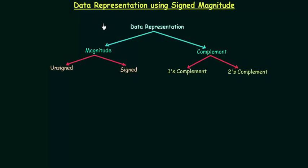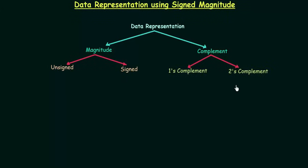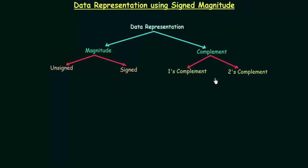In this lecture we will learn binary number representation. There are four ways: the first one is unsigned magnitude, the second one is signed magnitude, the third one is one's complement, and the last one is two's complement.